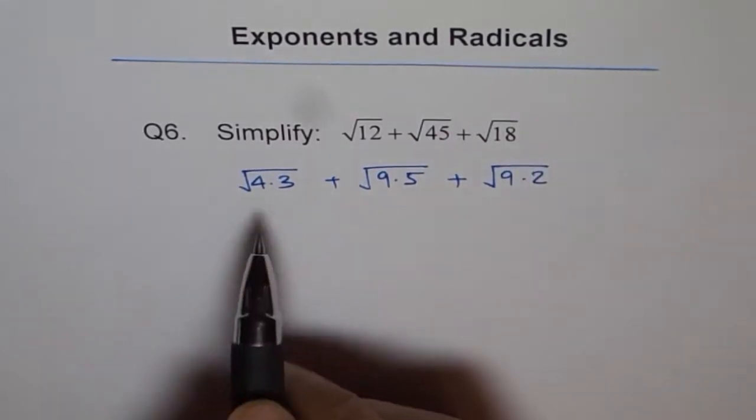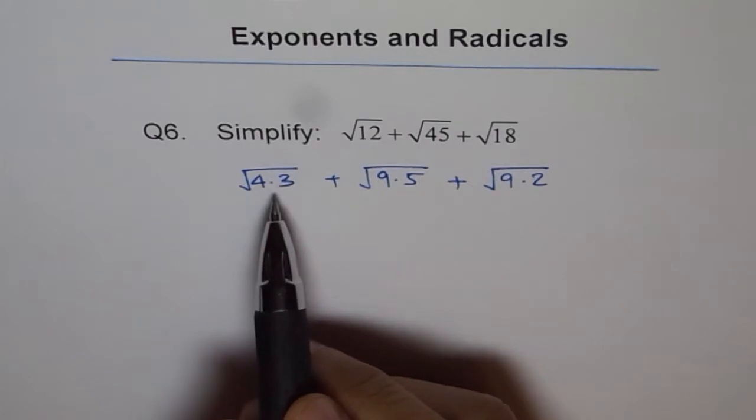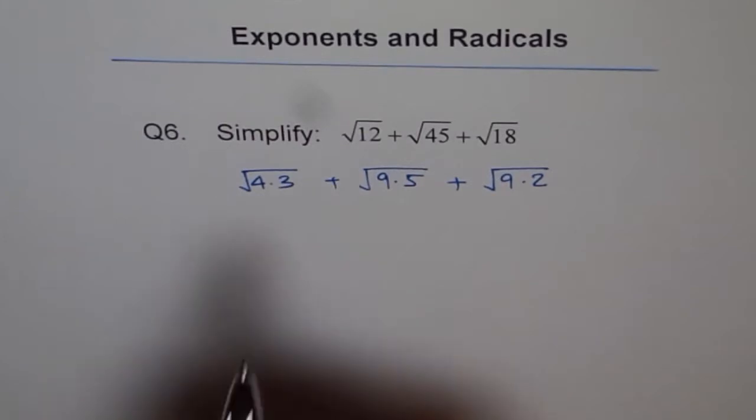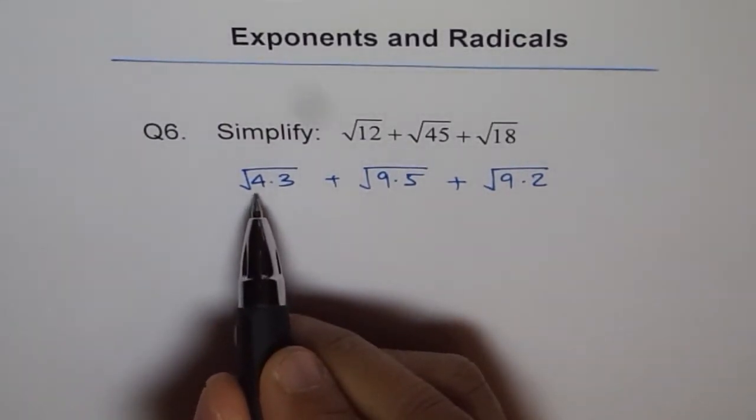I purposely used these numbers. I could have written 6 times 2, but that really doesn't help me to solve or simplify a square root function. Now how does 4 times 3 help me? 4 is a perfect square.